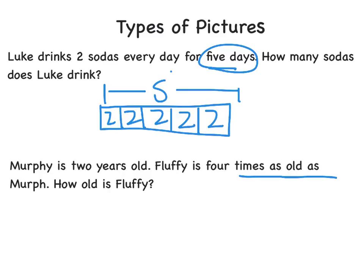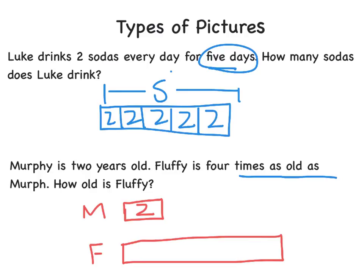The second type of picture is when we're comparing two things. In the second problem, it says Murphy is two years old and Fluffy is four times as old as Murphy. How old is Fluffy? When you're comparing two different things — or pets in this case — we'll have two parts to our picture. Up top, I'll draw Murphy's bar with a two in it since he's two years old. Fluffy goes below, and she's four times as old, so I'm splitting her bar into four parts. In each of those four boxes goes the two, because she has four times as much as Murphy's age of two.